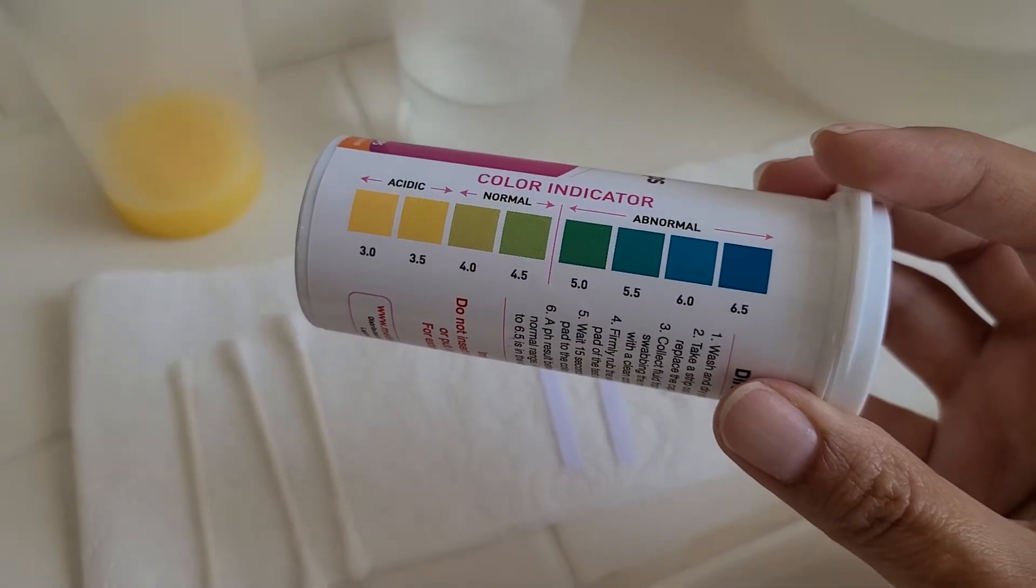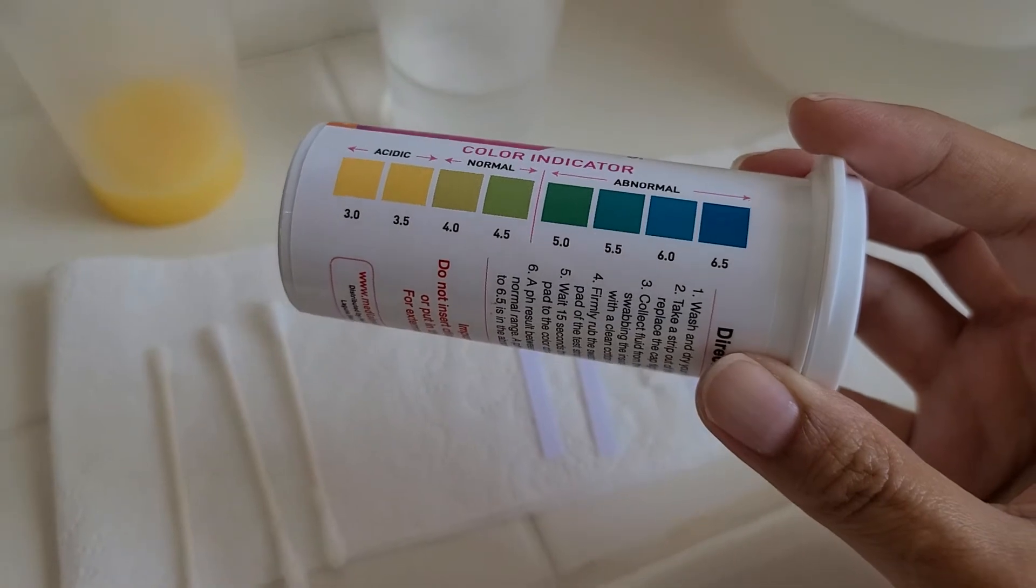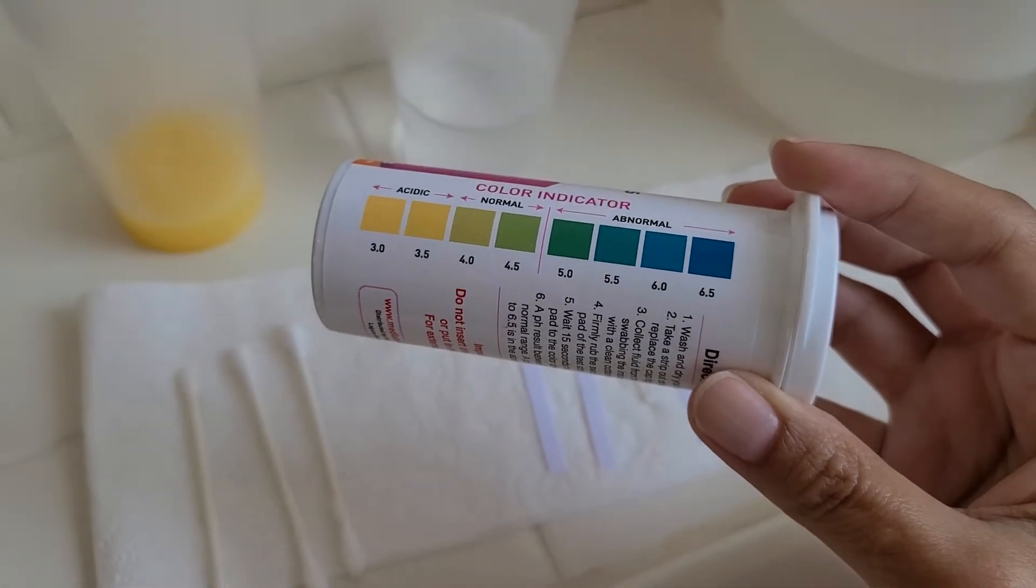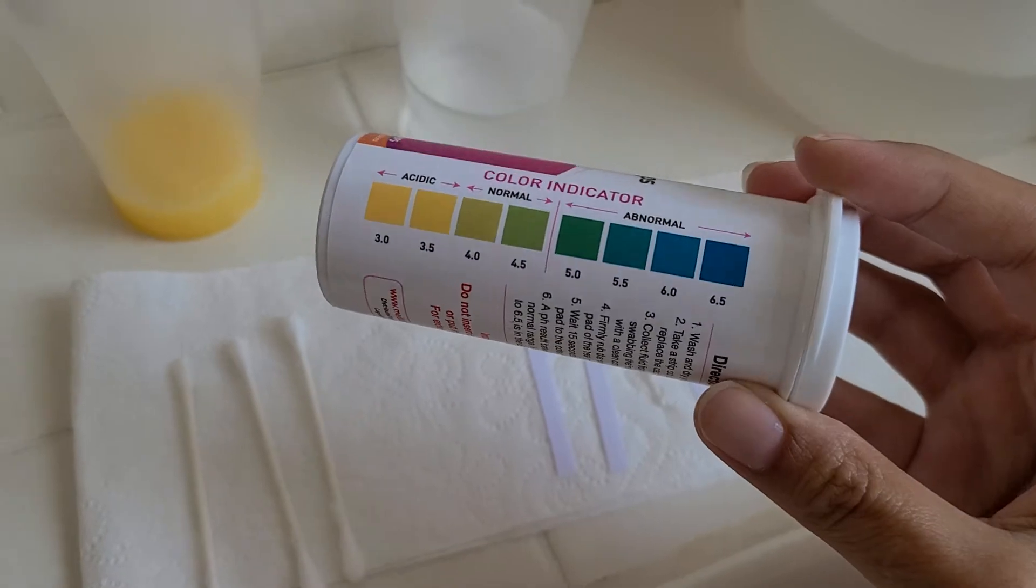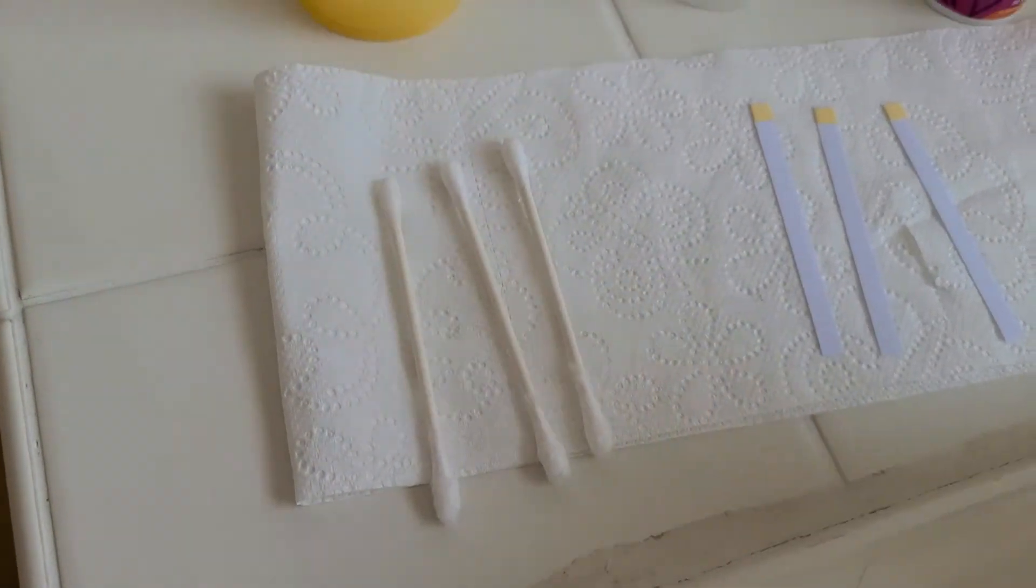And then anything above 4.5 is considered abnormal and you should probably get it checked out because maybe you have some kind of vaginal disease going on if your vaginal pH is abnormal. So we're just going to show what those results look like.